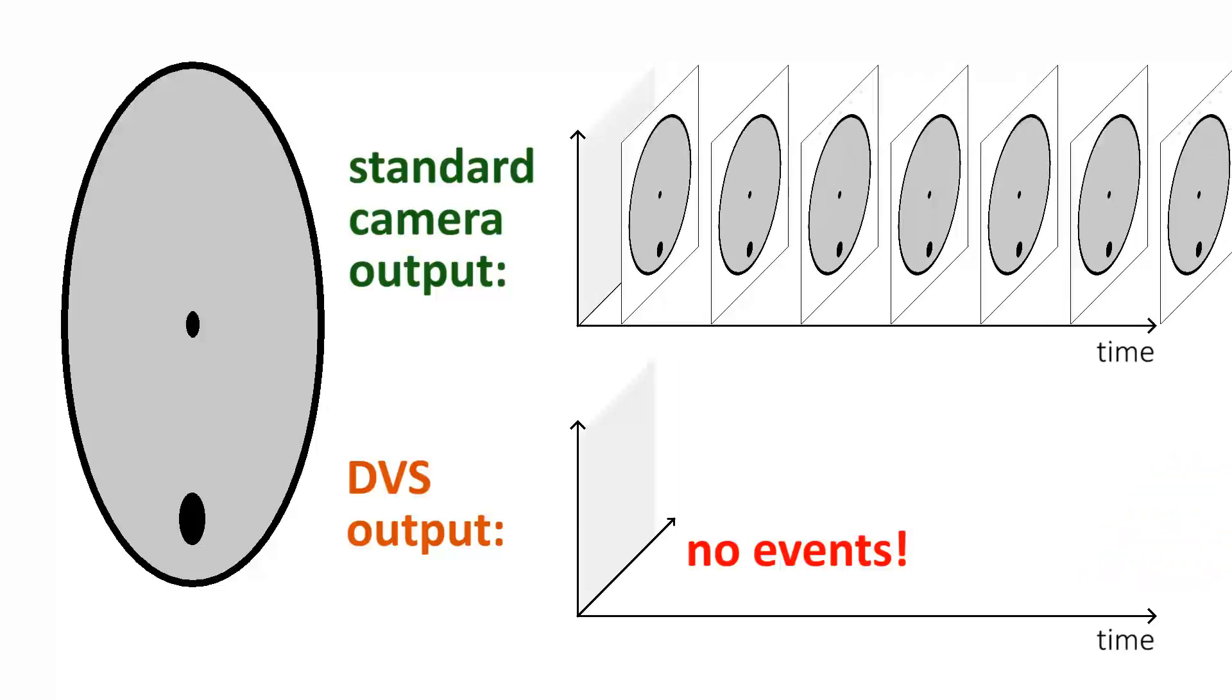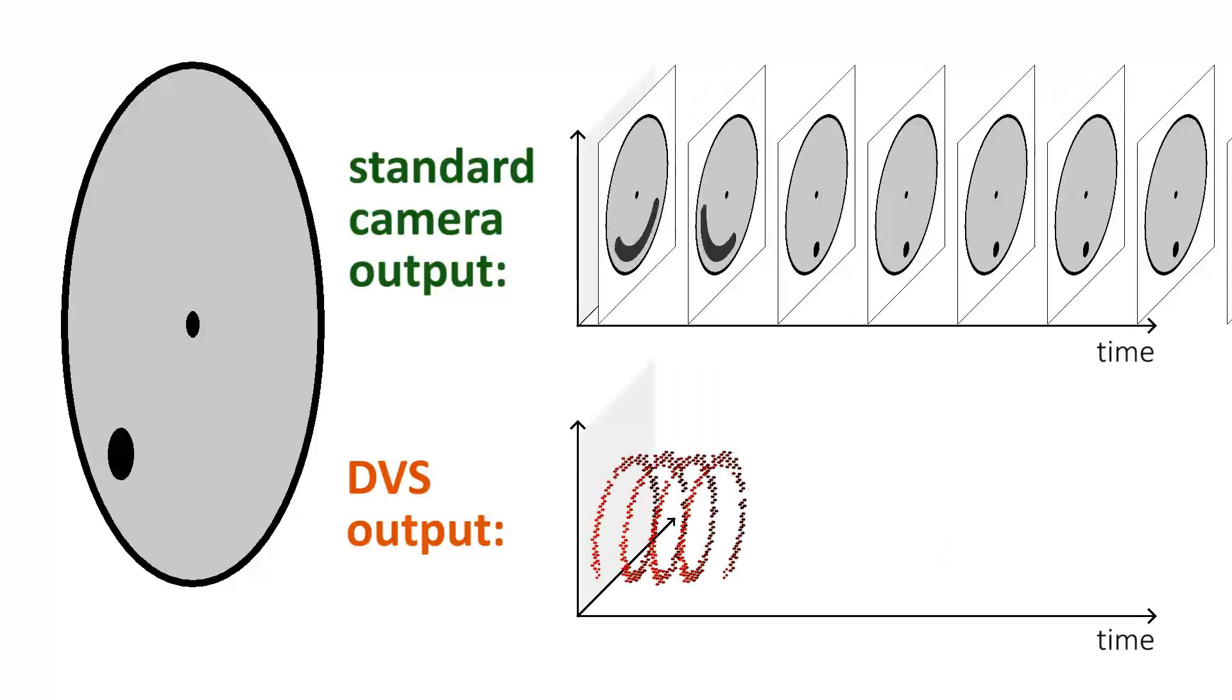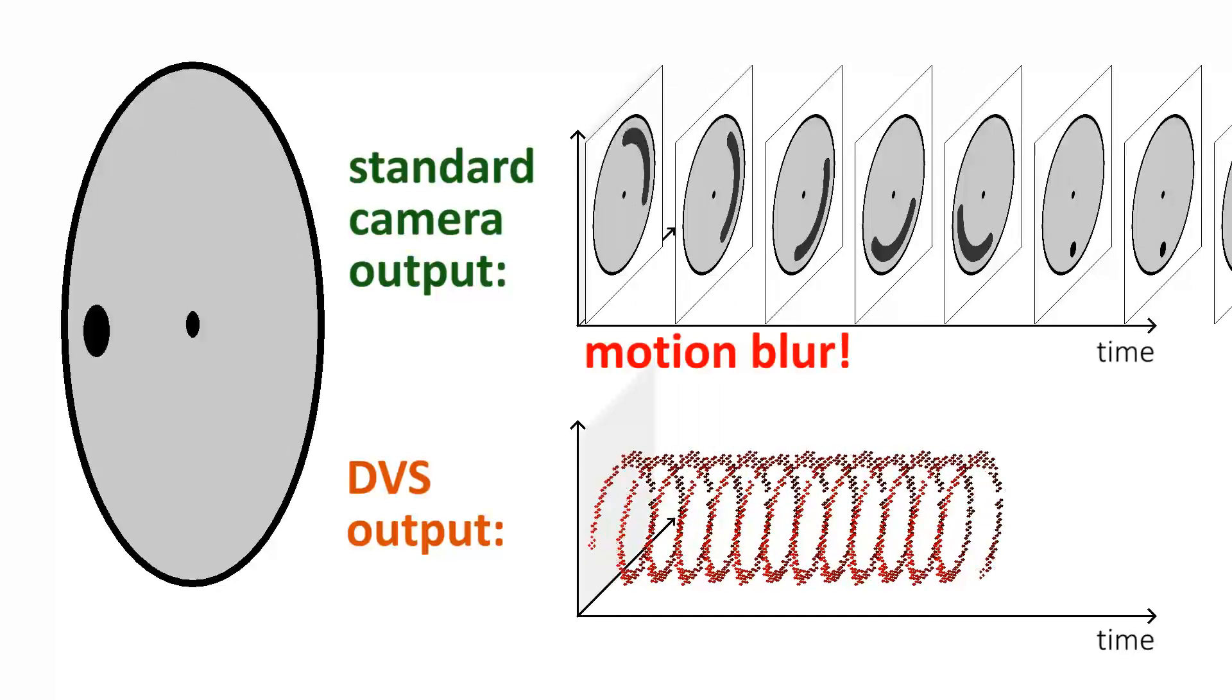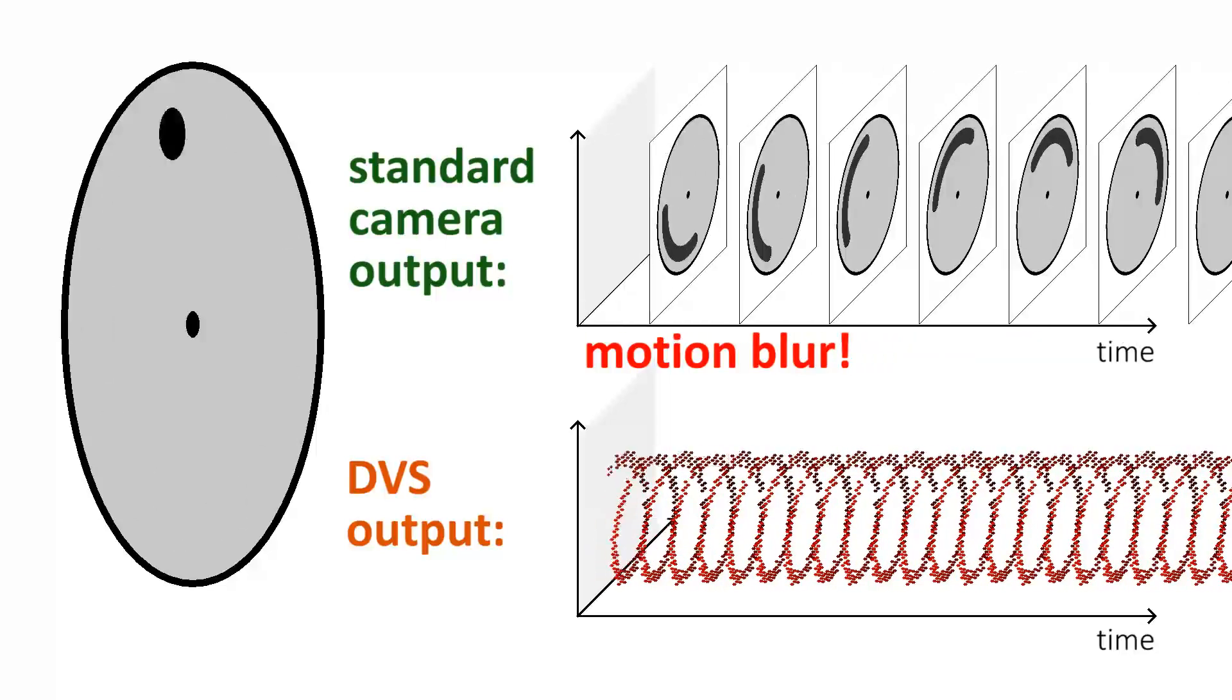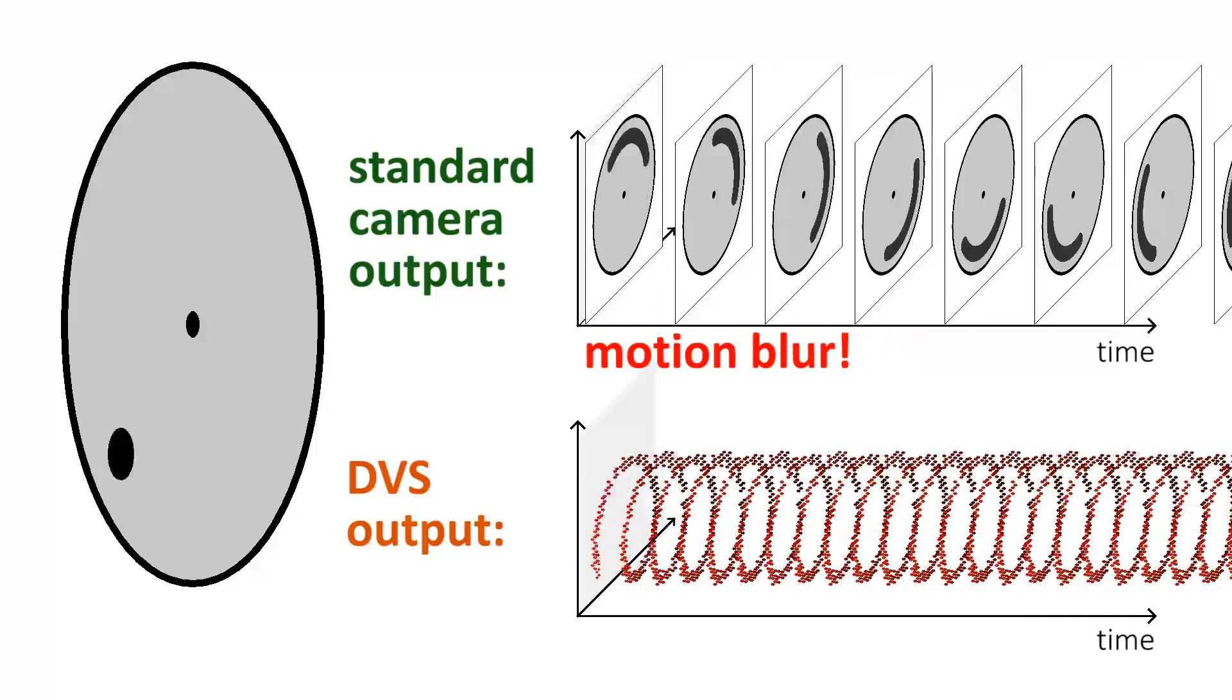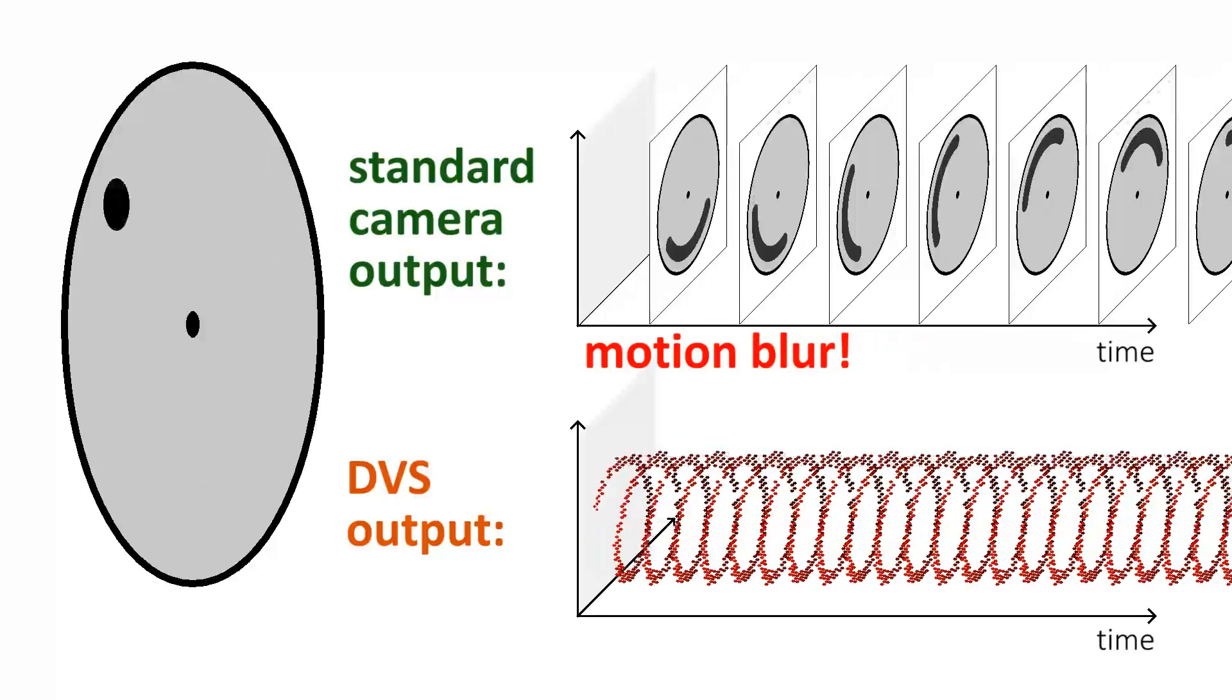However, a standard camera continues to wastefully send full image frames. When we speed up the dot, the images of the standard camera suffer from motion blur, while the spiral of events is still clearly visible. This is due to the very high temporal resolution of the DVS, which is in the order of microseconds.